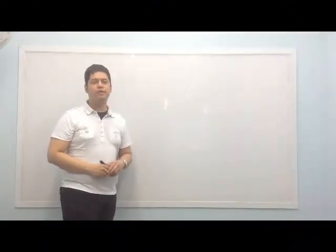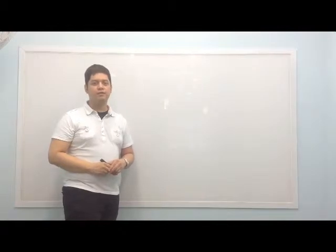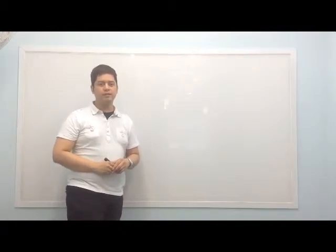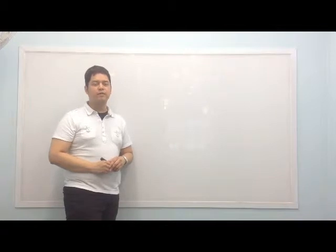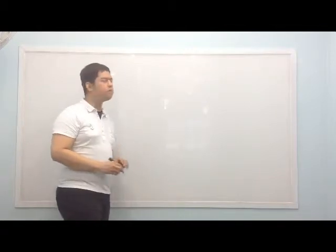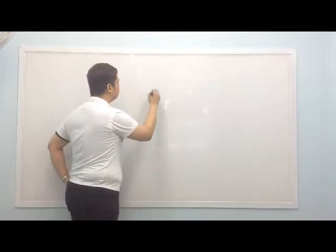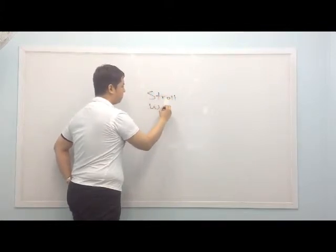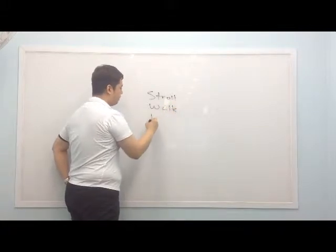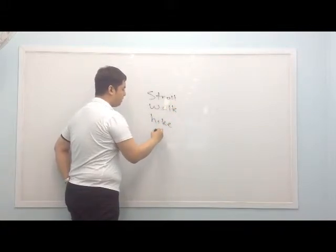Hi, I'm Gershom, a teacher here at CleanEDU Learning Center, and here's an English tip for you. Today I'm going to talk about common mistakes among four words. These four words are stroll, walk, hike, and climb.